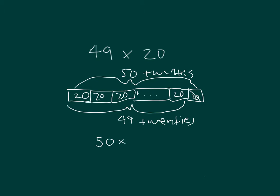So we have 50 20s and we're taking away 1 20. So 1,000 minus 20, so that we get 49 20s, equals 980.